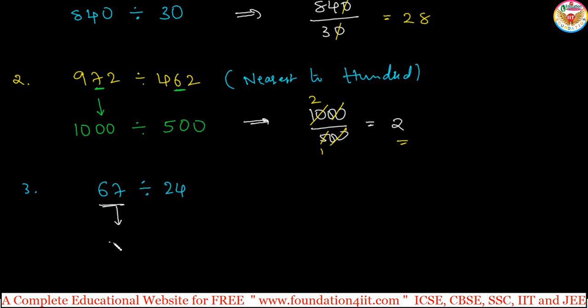67 is 70, and 24 is 20. Because units place is less than 5. Now 70 divided by 20 if you do.